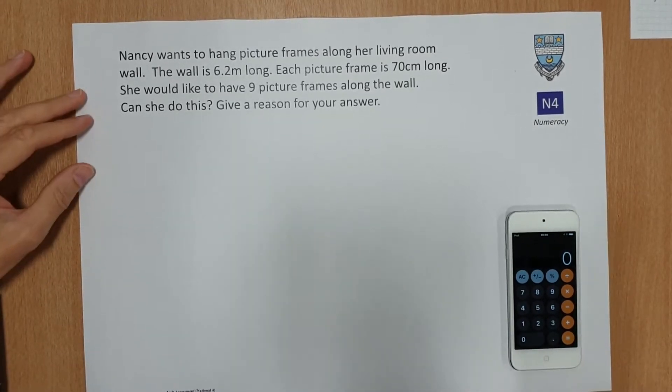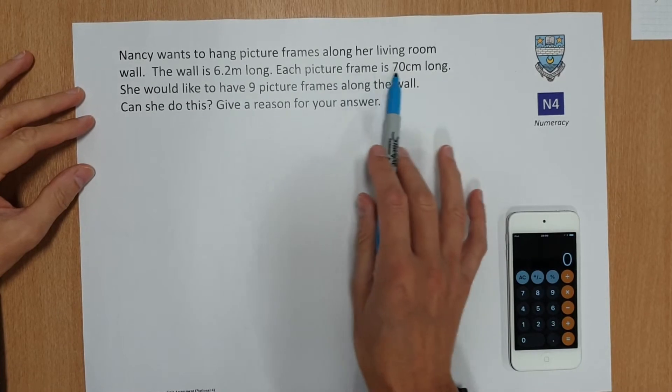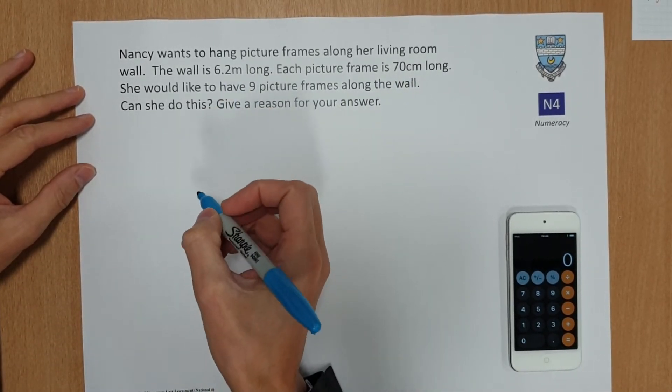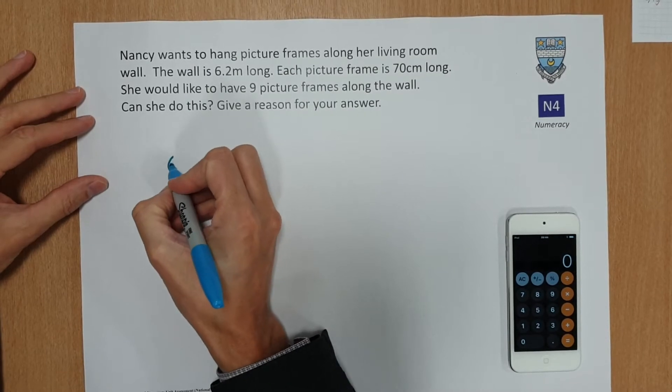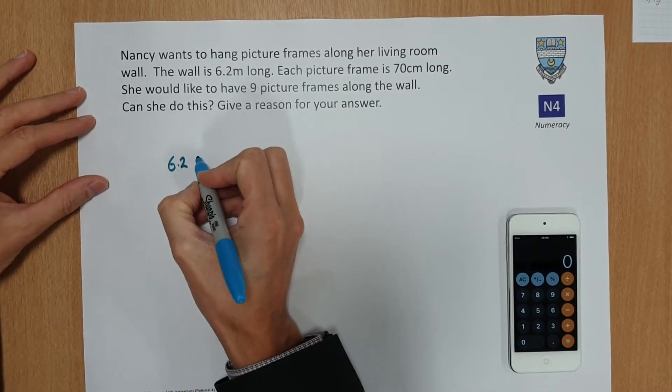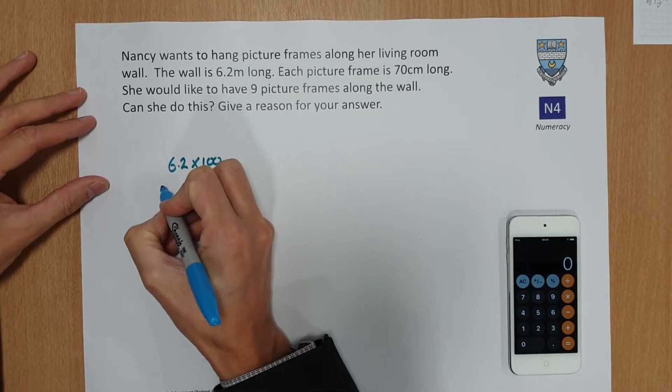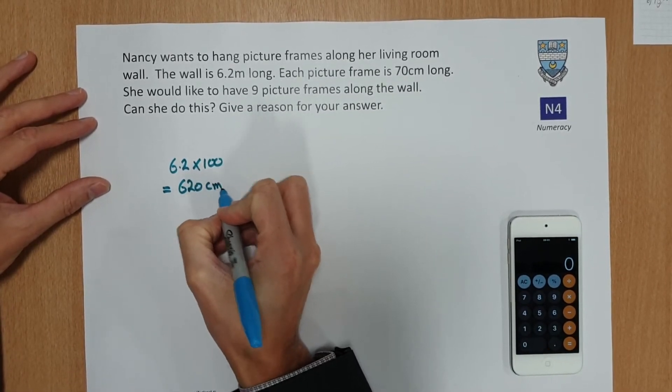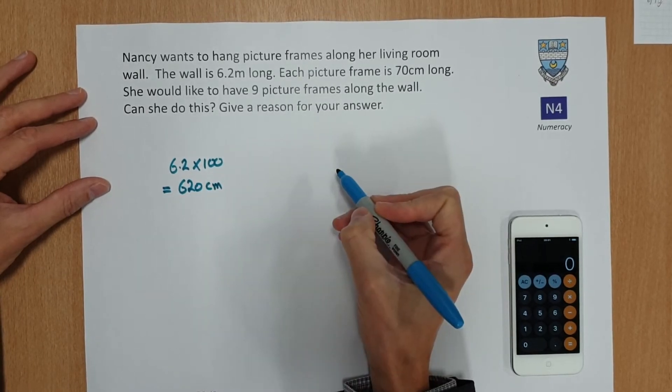The first thing we need to do is get these units the same. So let's convert the 6.2 meters into centimeters. 6.2 times 100 will give you 620 centimeters. That's the length of the wall.